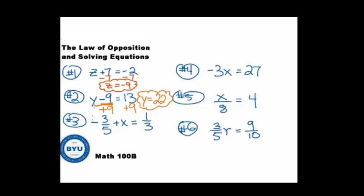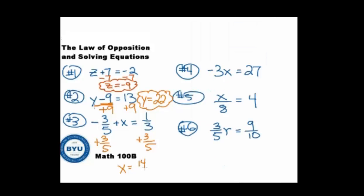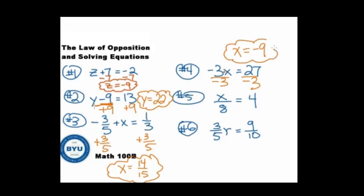For number 3, we have negative 3 fifths plus x equals something. We do the opposite operation — the opposite of minus 3 fifths is plus 3 fifths. So we add 3 fifths to both sides. This cancels out and we're left with x equals 1 third plus 3 fifths. You can get a common denominator or use a calculator — we get 14 fifths as our answer for number 3. On number 4, we have negative 3x, which means negative 3 times x. The opposite of multiplication is division, so we divide both sides by negative 3 and get x equals negative 9.